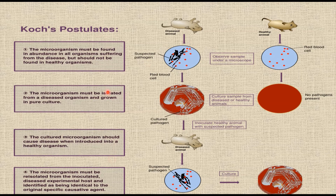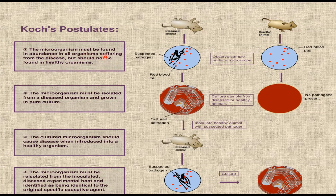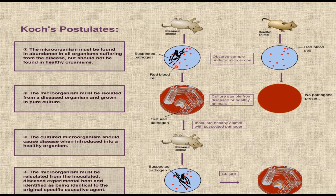This led Koch to propose his germ theory of disease, which states that microbes cause diseases. He proposed four postulates. The first postulate states that the microorganism must be found in abundance in all organisms suffering from the disease, but should not be found in a healthy organism — the diseased animal should possess the pathogen but the healthy animal should not.